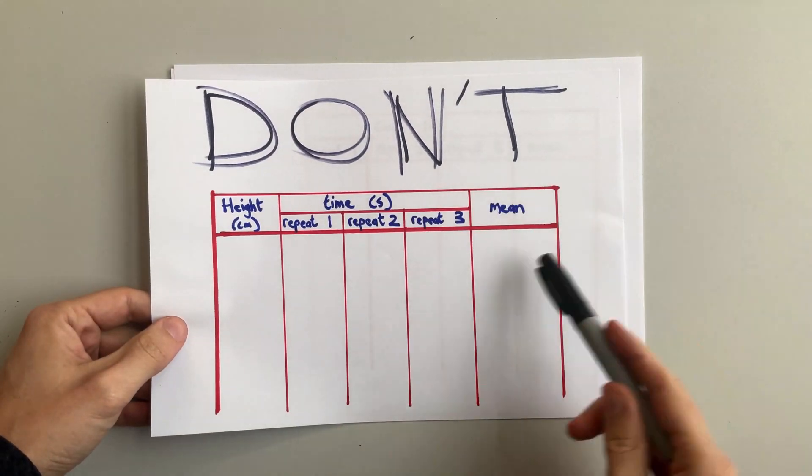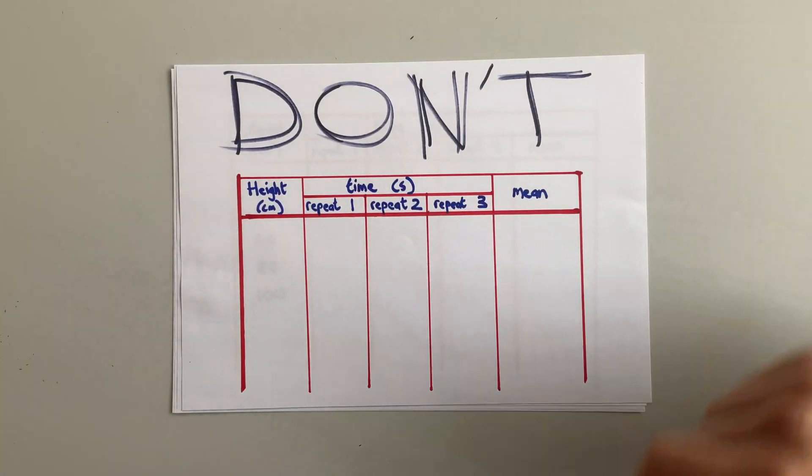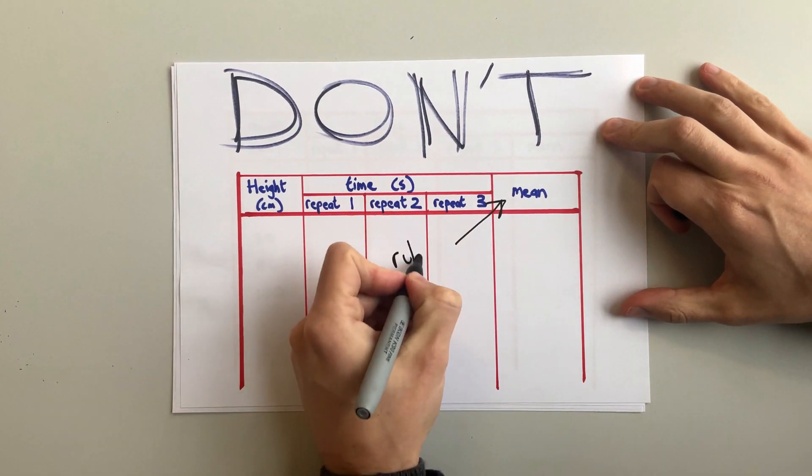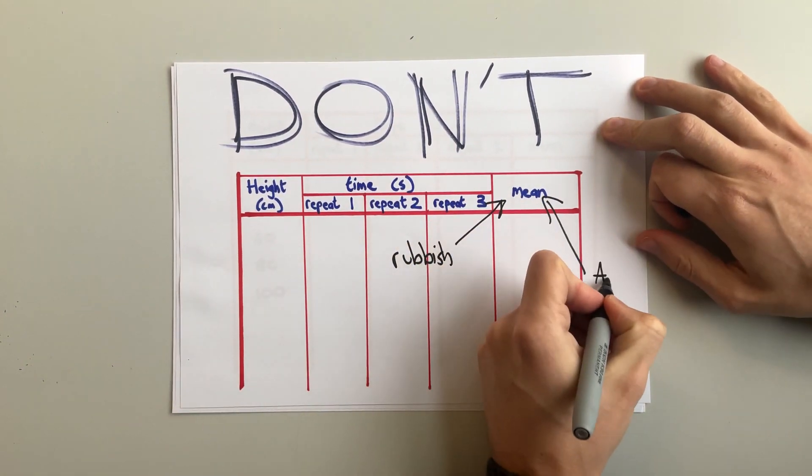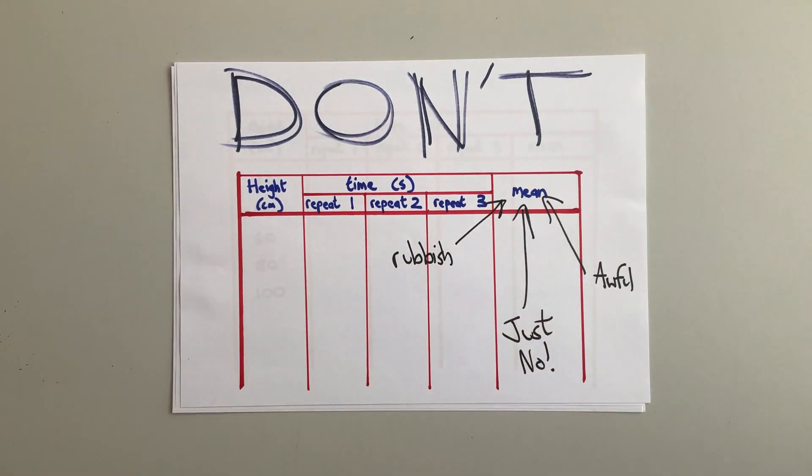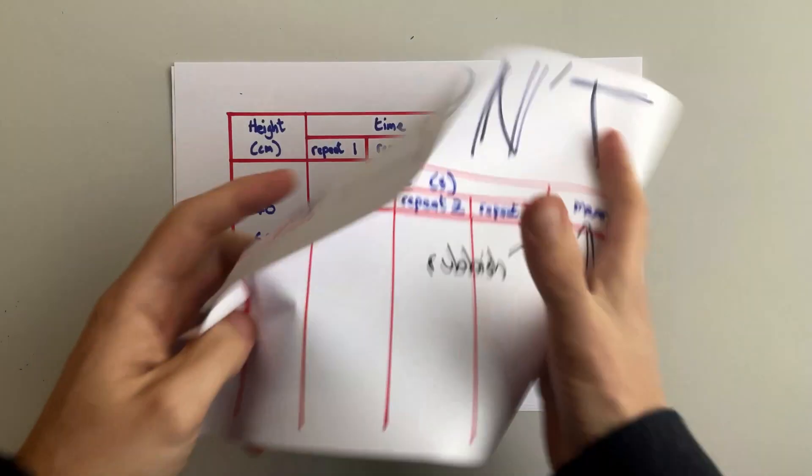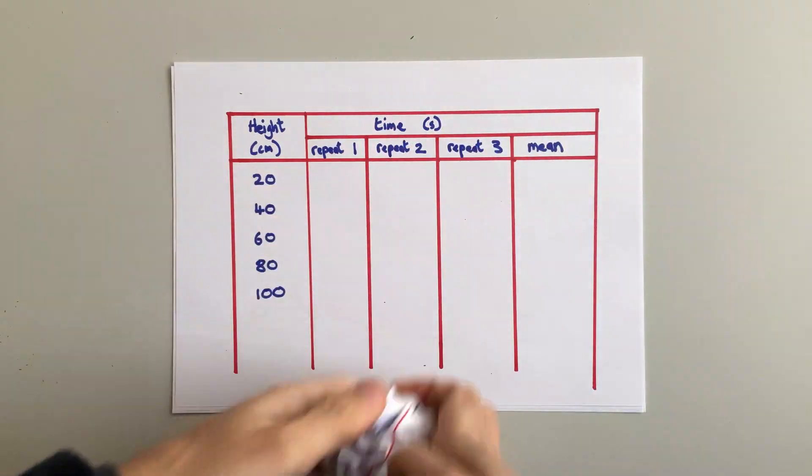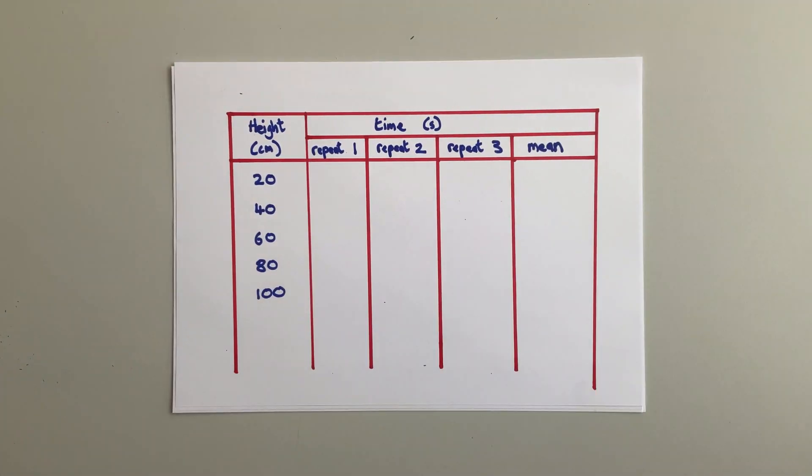The first one is this, putting a separate column on the end for mean. But this time, there's no word above us to tell us what type of mean this is. Is it the mean time, the mean height, or a number to tell you just how likely you are to steal somebody else's sandwich? We don't know. So this is rubbish, you've got to make sure that word mean is underneath the word time, so we know what type of mean it is.